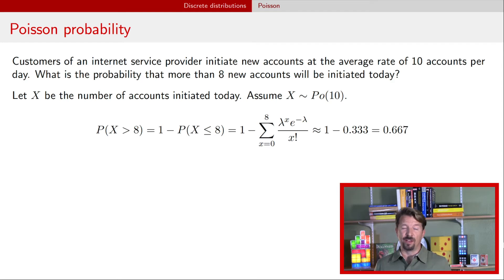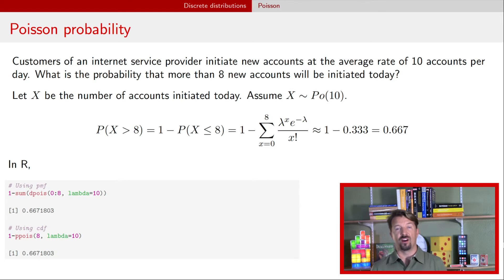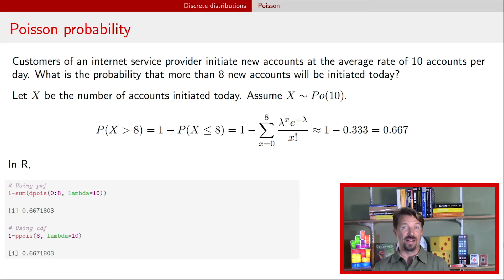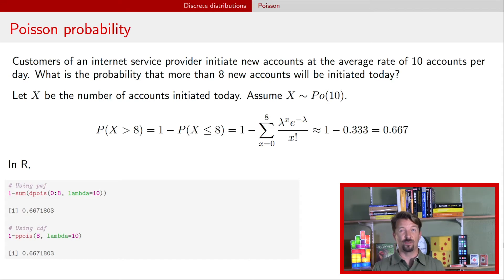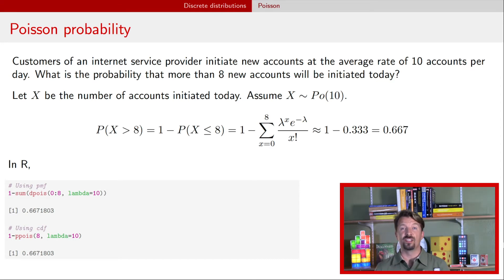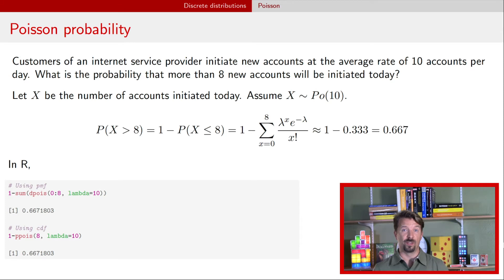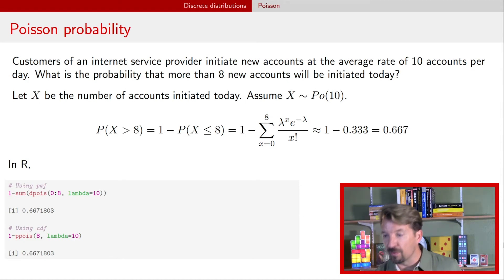We could do this by hand, but generally we use software. In R, there are two ways to do this calculation. The first uses dpois — the probability mass function for a Poisson random variable — evaluated from 0 to 8 using 0:8, with lambda equal to 10, then summing the results. The alternative is ppois — the cumulative distribution function for a Poisson — evaluating at 8 with rate parameter 10. Under either approach, we find the probability is about two-thirds, just as before.